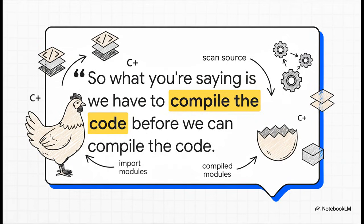But this, of course, created a really fascinating new chicken and egg problem for the build systems. And the lead of CMake, Bill Hoffman, put it absolutely perfectly. He said, okay, to know which modules to import, you have to scan the source code. But to compile that source code, you first need the already compiled modules. So as he put it, what you're saying is, we have to compile the code before we can compile the code. It's a fantastic little paradox.